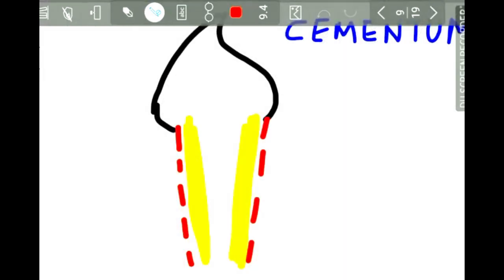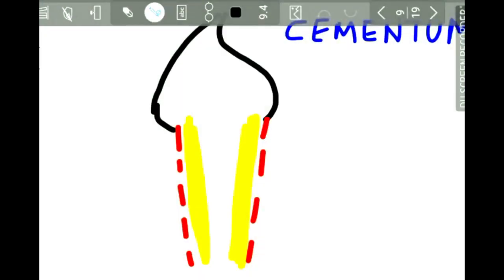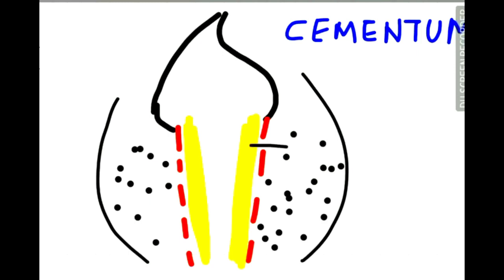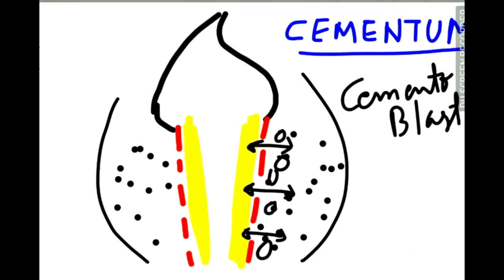Once the dentine is formed and Hertwig's epithelial root sheath loses its continuity, the surrounding dental sac is affected. The dental sac surrounds the tooth germ, and the connective tissue cells of the dental sac begin to proliferate. As they proliferate, these cells come in contact with the radicular dentine and differentiate into cementoblasts. The cementoblasts then begin forming cementum over the layer of dentine, depositing cementum over the dentine.